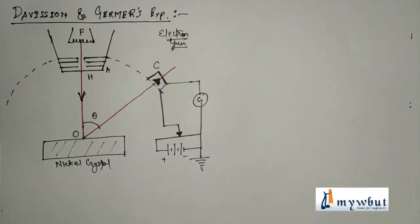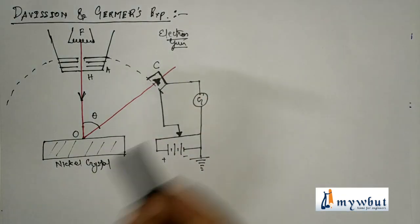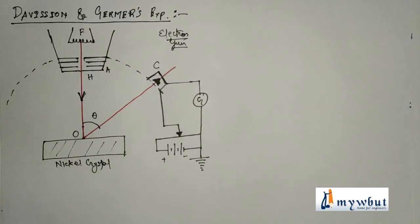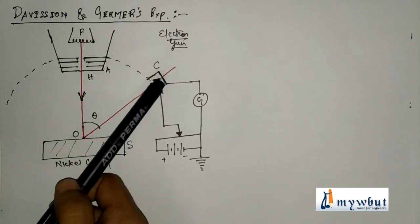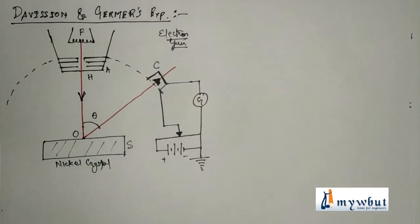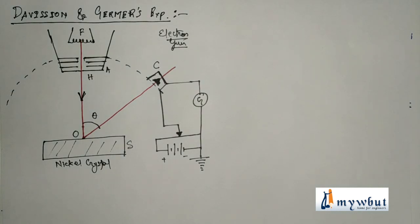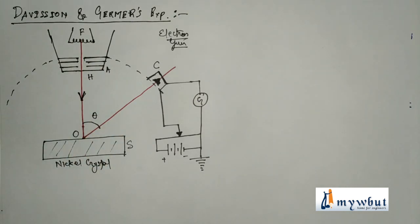The intensity of the scattered electron beam in a given direction is received by a Faraday cup detector C and measured with a galvanometer G. The Faraday cup detects only elastically scattered electrons from the nickel scatterer S. By rotating the detector about point O, the intensity is measured for different scattering angles θ. The variation of intensity with θ was plotted as a polar graph for different accelerating potentials V.